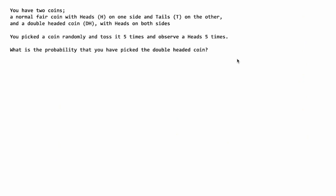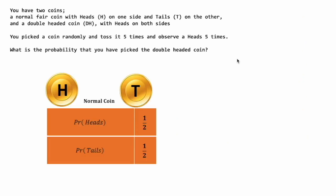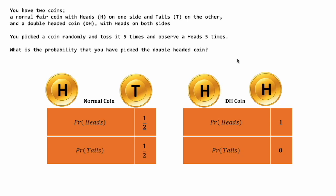Laying out the probabilities of the outcomes obtainable with the two types of coins: for the normal coin, the probability of heads and tails are identical at 0.5, as expected for a normal fair coin. For the double-headed coin, since there is only one outcome of heads possible, the probability of that occurring must be one, hence a zero for the outcome of tails.